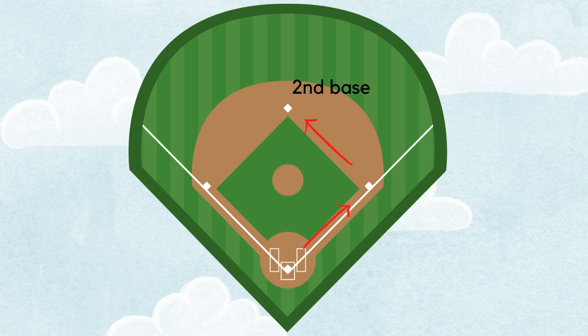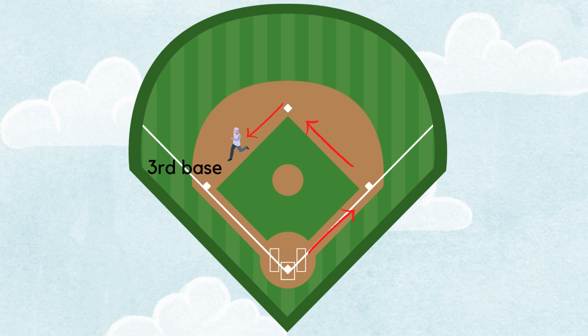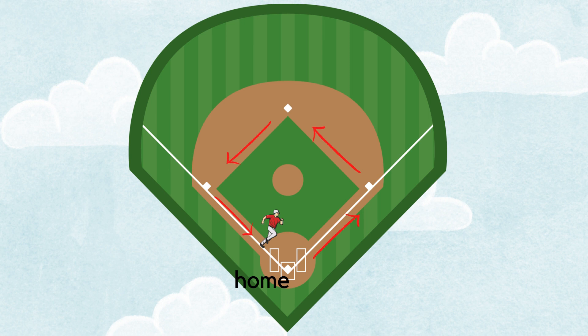When the batter hits the ball, they run around the bases in order. This spot is called first base — after you hit the ball you run to first base, then second base, then third base. The starting area is not called fourth base — it's called home plate. You run all the way around the bases back to home, and when you get home you score a point.